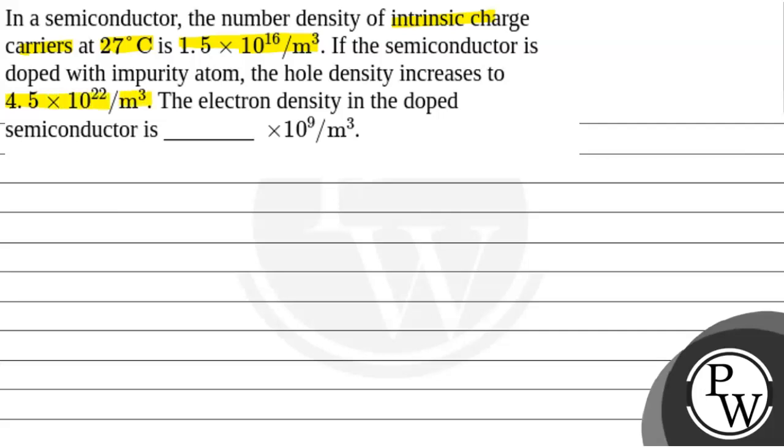The electron density in the doped semiconductor would be blank × 10^9 per meter cube.